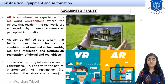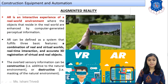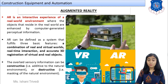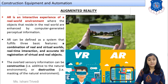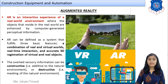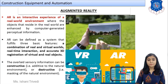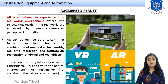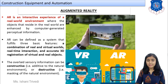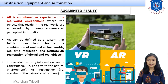AR can be defined as a system which fulfills three basic features: a combination of real and virtual worlds, real-time interaction, and accurate 3D registration of virtual and real objects. These three features combined make it different from virtual reality, though not by very much. Together these define what augmented reality is.